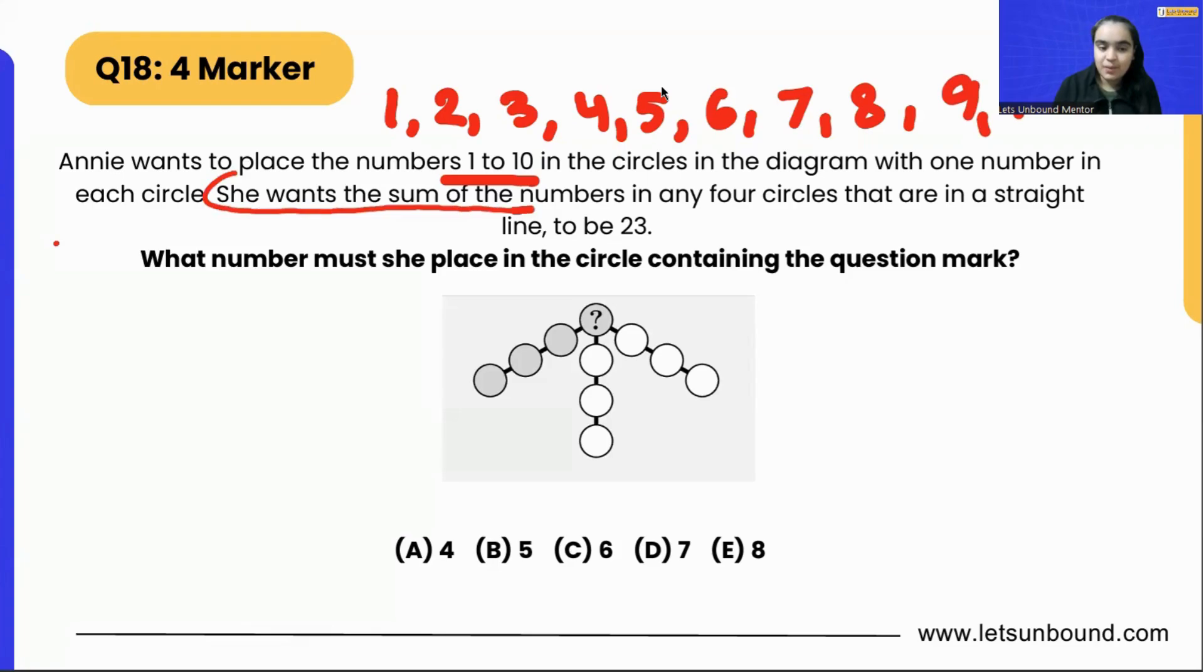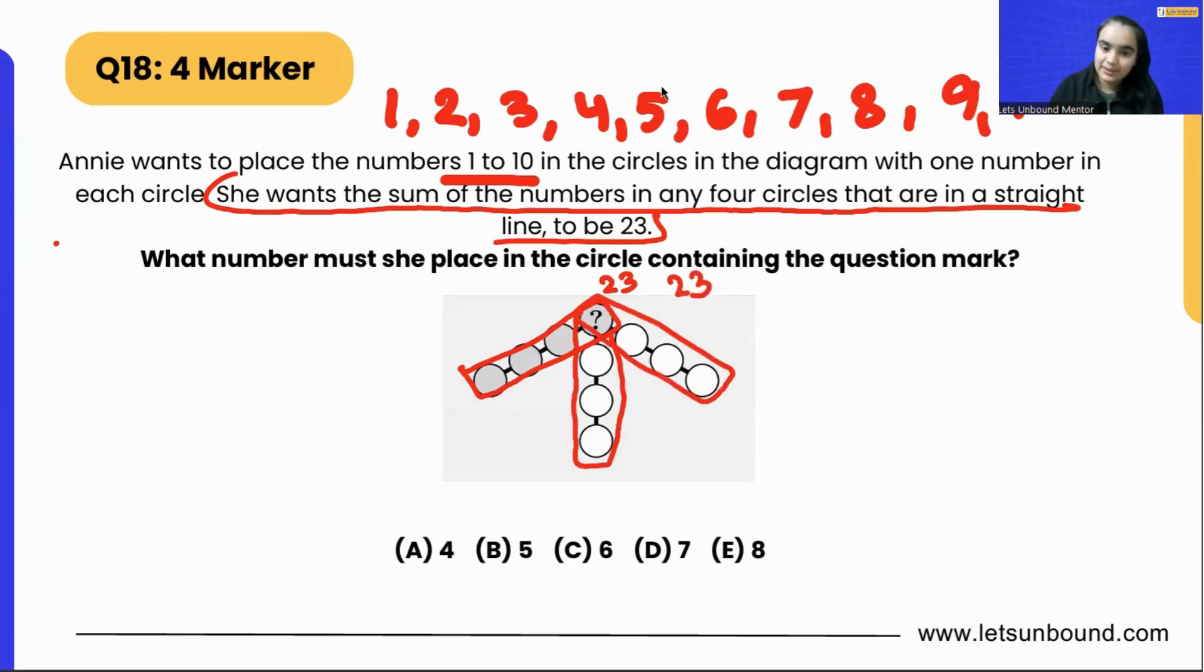She wants the sum of the numbers in any four circles that are in a straight line to be 23. So what numbers we write in this straight line should add up to 23. What numbers we write in this line will be 23 again, and what numbers we write in this line is going to be 23 again. So what number must she place in the circle containing the question mark?